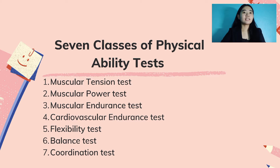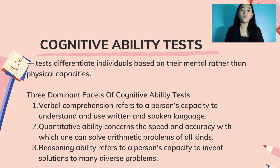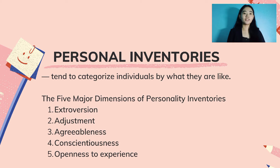Cognitive Ability Tests differentiate individuals based on their mental rather than physical abilities. There are three types: Verbal Comprehension, which refers to a person's capacity to understand and use written language; Quantitative Ability, which concerns the speed and accuracy with which one can solve arithmetic problems; and Reasoning Ability, which refers to a person's ability to formulate solutions to many different kinds of problems.